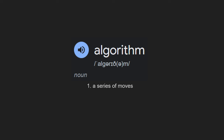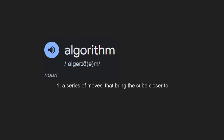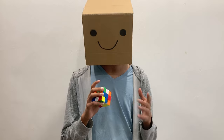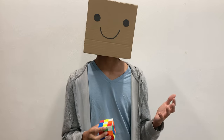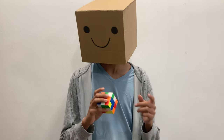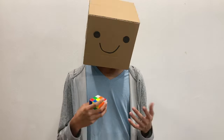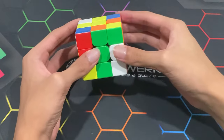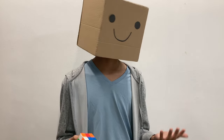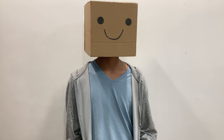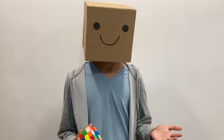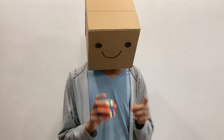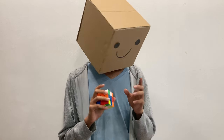So let's look at the second definition: an algorithm is a series of moves that brings the cube closer to a solved state. Now this definition is much better — one that jperm himself actually uses — but I was able to find one pretty big loophole. This definition implies that a one-move cross solution is considered an algorithm. And sure, to some people a one-move cross might be an algorithm, but it doesn't feel right to me. An algorithm isn't something that you just figure out on the spot. It's something that you have to learn. Something unintuitive.